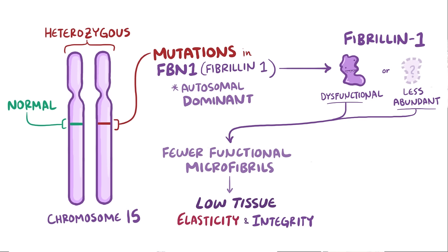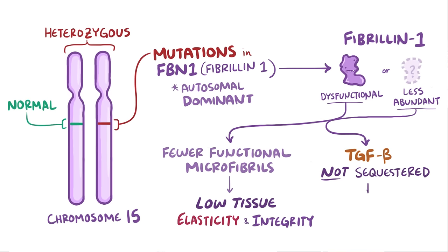Connective tissue is found throughout the body, so this can affect nearly every body system. Additionally, TGF-beta doesn't get effectively sequestered, so TGF-beta signaling is excessive in these tissues, which means more growth.